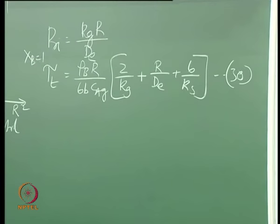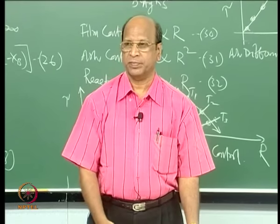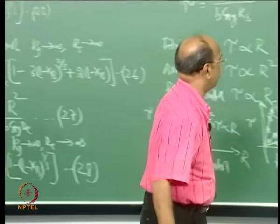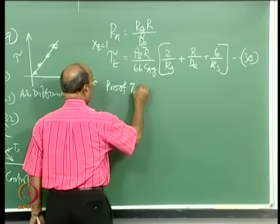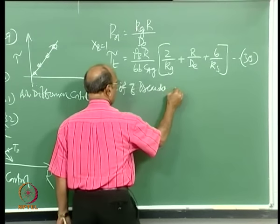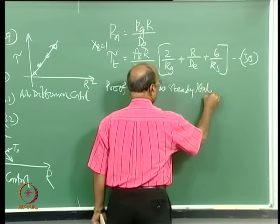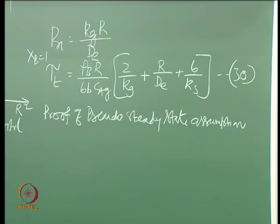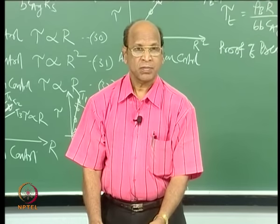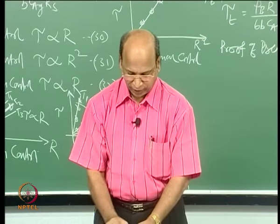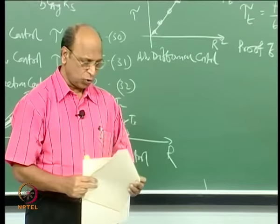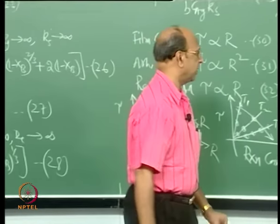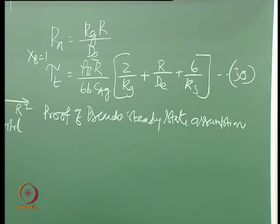One more thing: the proof of pseudo steady state assumption. Yesterday we assumed pseudo steady state — now we verify why it is valid. The proof, which I learned from Professor Ananth, is not in any textbook. The stoichiometric equation is: A(gas) + b*B(solid) → r*R(solid) + s*S(gas), with mole balance d(n_A)/dt = -(1/b) * d(n_B)/dt.